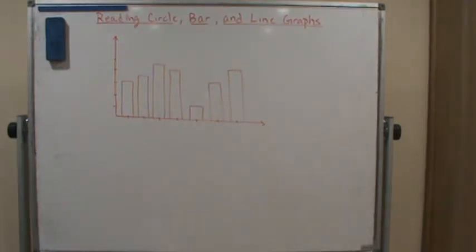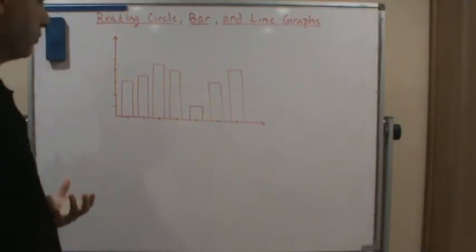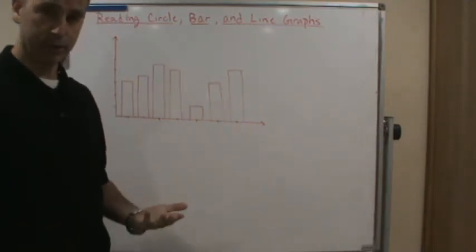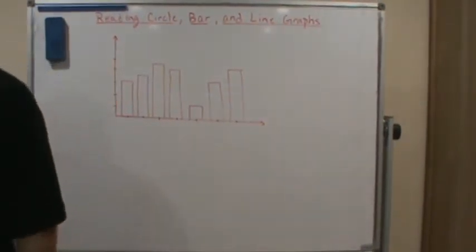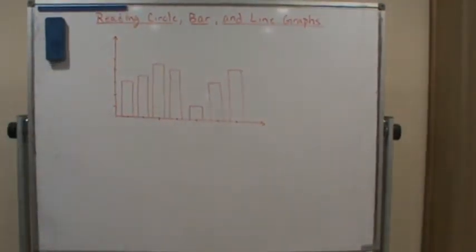So in a bar graph, you're using two or more bars to compare amounts of things. These amounts could be percentages or values, things like that, frequencies.